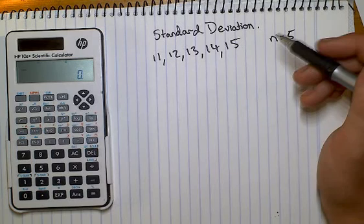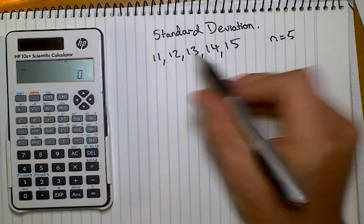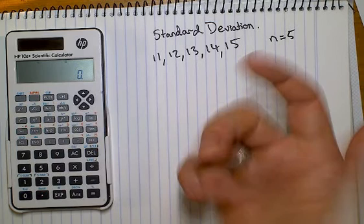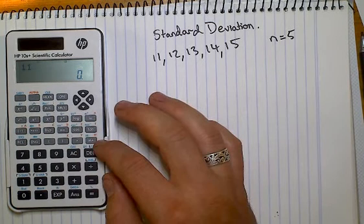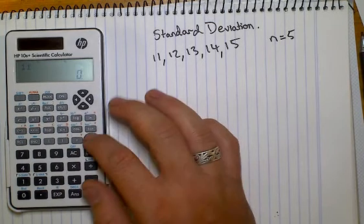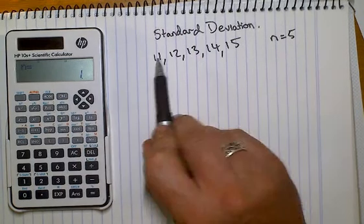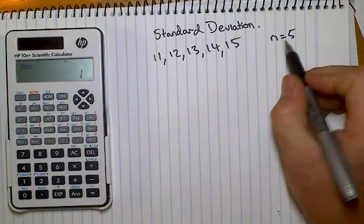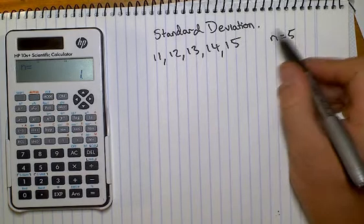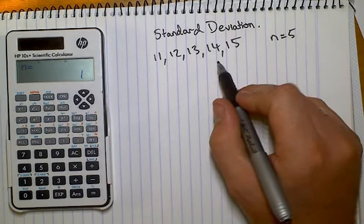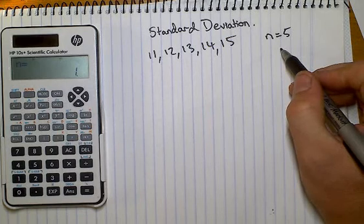From this point onwards it's quite simple. All we do is enter our scores in. So in this case 11, then press M+. You'll see N equals 1 comes up. That means we've entered in one score, and remember we want to enter in N equals 5. This is also a way of checking to see if you've actually entered everything in, because once you get N equals 5 then you know that it's worked.